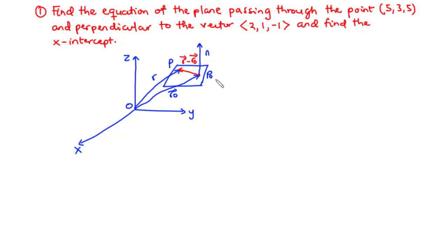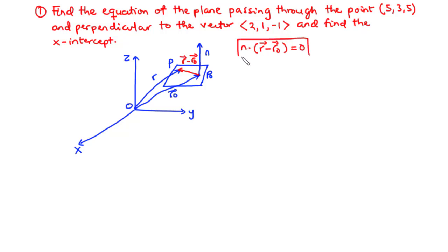Since the normal vector is perpendicular to every point on the plane, what this primarily means is that the normal vector n is also perpendicular to the vector R minus R0. And thus, the dot product of two perpendicular vectors — or the dot product of two orthogonal vectors — is equal to 0. So we have the dot product of n and the vector R minus R0 to be equal to 0. We call this the vector equation of a plane.